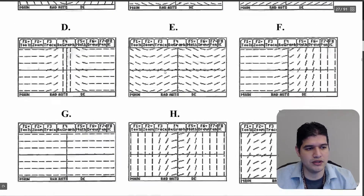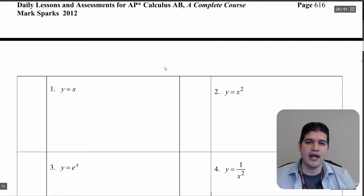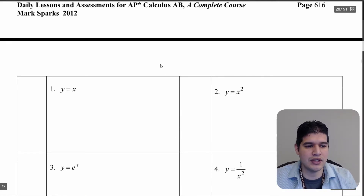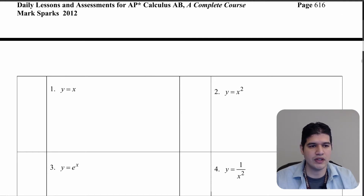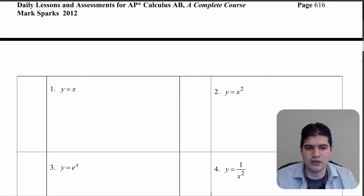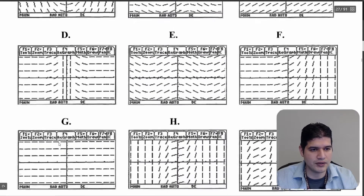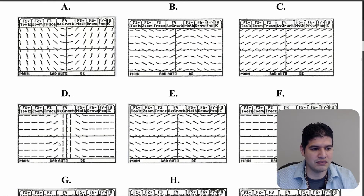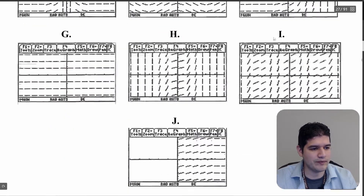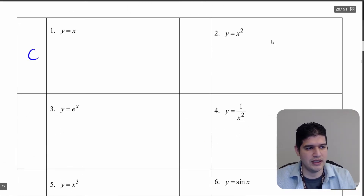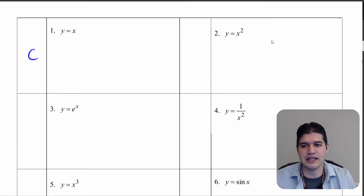Moving on to our next examples — we're now matching the slope field to solutions. Notice here we're already given y. Keep in mind that the slope field should pretty much match what these equations are because we're already given the original function. In number one I should already be looking for something that's a linear equation. The only answer choice for that would be answer choice c.